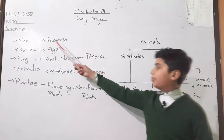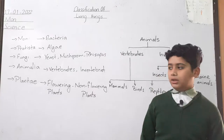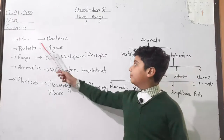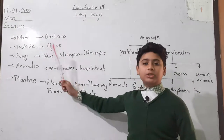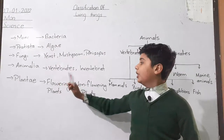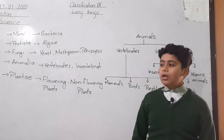There are 5 groups of Classification of Living Things: Kingdom Monera, Kingdom Protista, Kingdom Plantae, Kingdom Fungi, and Kingdom Animalia.